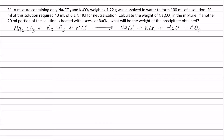Let the weight of sodium carbonate be x grams and weight of potassium carbonate will be 1.22 minus x grams. The 100 ml solution contains x/53 equivalents of sodium carbonate, where x is the weight of sodium carbonate and 53 is the equivalent weight of sodium carbonate.